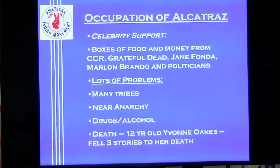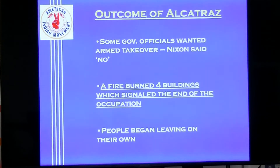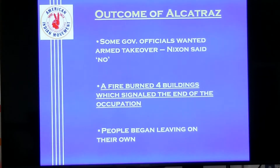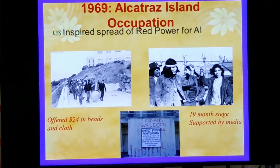Things came to a head when a 12-year-old girl, Yvonne Oaks, fell three stories to her death while climbing on part of the Alcatraz complex. Some government officials wanted to take it over using the National Guard or the military, but President Nixon said no. Eventually a fire started, burning four buildings down, ending the occupation. People began to leave on their own, and at the very end the FBI arrested about three people who were still around.